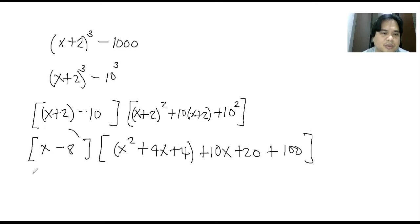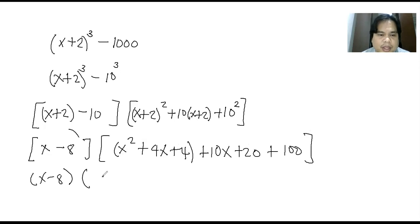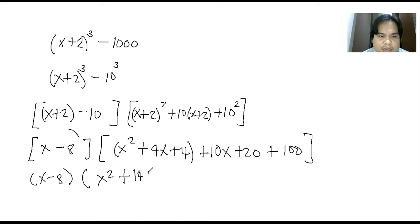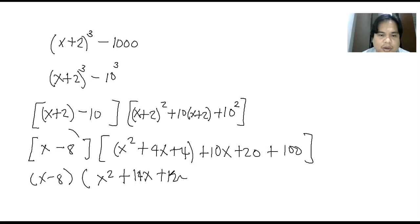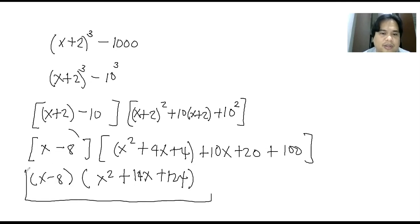The next thing to do is further simplify once again. x squared, then 4x plus 10x is 14x, so plus 14x. How about the constants? 4 plus 20 plus 100 is 124. That's already your factored form.